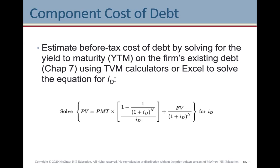For debt, things can get a bit trickier. Estimate the before-tax cost of debt by solving for the yield to maturity on the firm's existing debt — that's what we did in chapter 7 using time value of money calculators or Excel. The formula is: PV equals payment times [1 minus 1/(1 + iD)^N] / iD, plus FV/(1 + iD)^N. A financial calculator is much more straightforward — you just need a good understanding of how to input the variables.